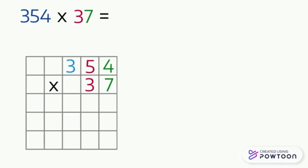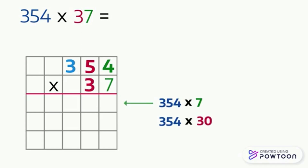Then we can write the multiplication sign to the left and draw the line that separates the calculation from its result. We will first multiply 354 by the ones digit, which is 7, and write the result in the answer box. Then we will multiply 354 by the tens digit, which is 3, and write the result in the answer box. At the end we will add the two results.